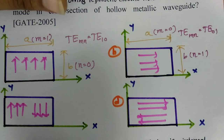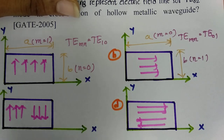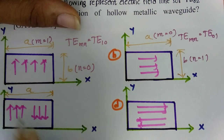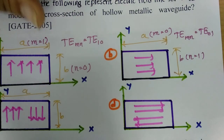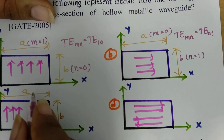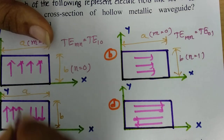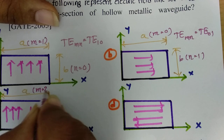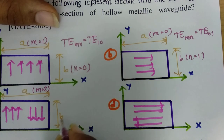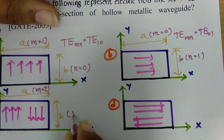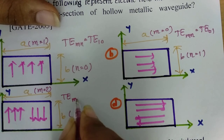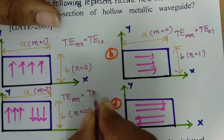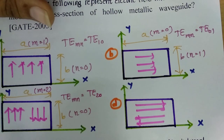Now consider this case: A and B are as shown. With respect to dimension A, the electric field variation happens twice, so M = 2. There is no variation with respect to the horizontal plane, so N = 0. The mode of operation for this waveguide is TE20.